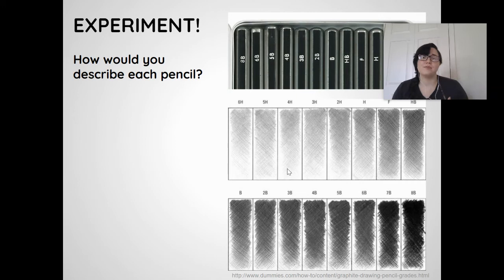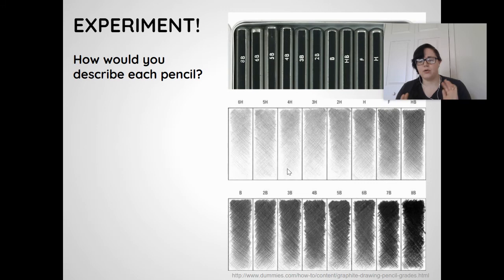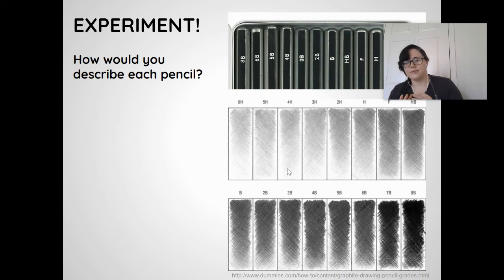Take a moment and experiment with the three pencils you've been given. As you use each one, think about words that describe them. Pause the video and try the 5B (blue), the HB (black), and the 6H (turquoise). Once you're done, come back and we'll discuss how each one is different.